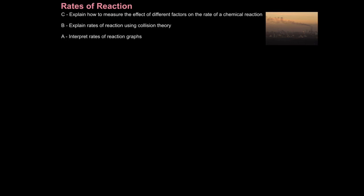In this tutorial we're going to look at rates of reaction. The first aim is to explain how to measure the effect of different factors on the rate of a chemical reaction, then explain rates of reaction using collision theory, and finally interpret rates of reaction graphs.